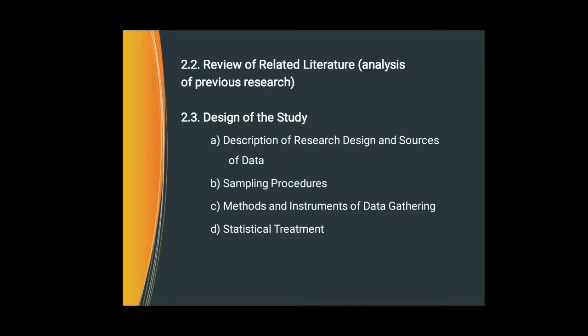The second component is the review of related literature. The third includes the design of study — what type of design you are using in your research. The design of study includes the description of the research design, source of data — such as primary or secondary source — sampling procedures, methods and instruments of data gathering, and statistical treatments.